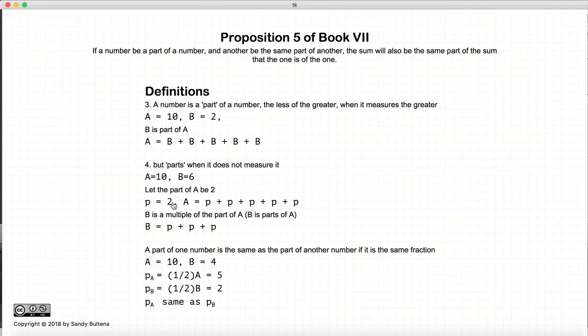So, in this example, let the fraction or the part be 1 fifth. So, a is equal to b plus b plus b plus b plus b. And b is equal to 3 fifths of a. So, it is equal to parts of a. So, this is the distinction between part and parts.